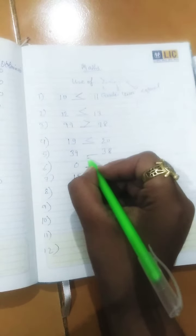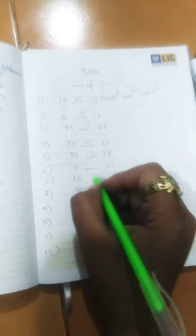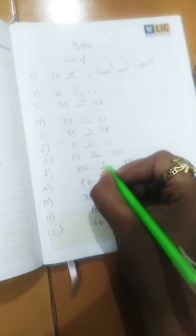19 is again lesser than 20. 39 is greater than 38. 0 is equal to 0. We have all learned 15 is equal to 15. Here, 100 is greater than 99. 56 is greater than 54.